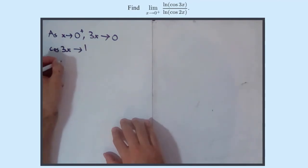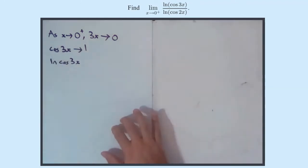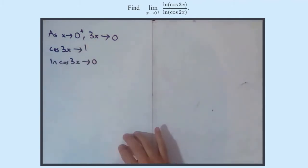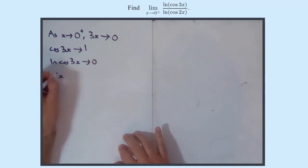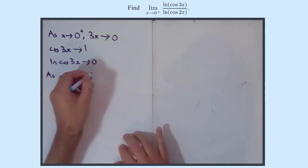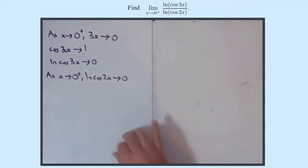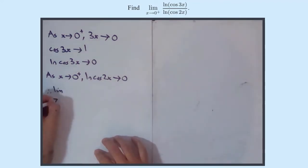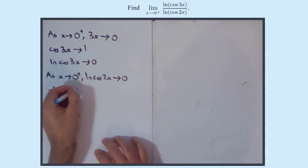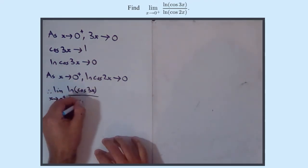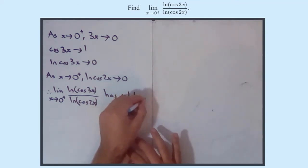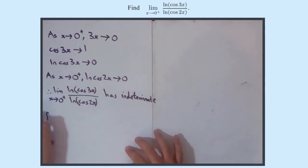So ln of cos 3x — remember, it's the power you raise e to in order to get 1, so you need to raise e to the power 0, so that approaches 0. In the same way, it's not going to be any different for the denominator. As x approaches 0 from the right-hand side, ln of cos 2x also approaches 0, for exactly the same reasons. So the limit of ln(cos 3x) over ln(cos 2x) has indeterminate form — in this case it's 0 over 0.